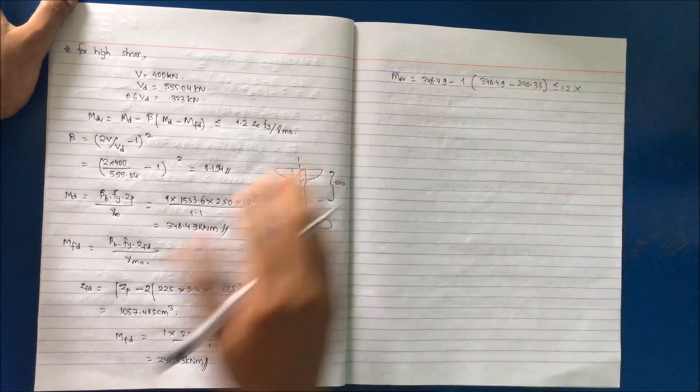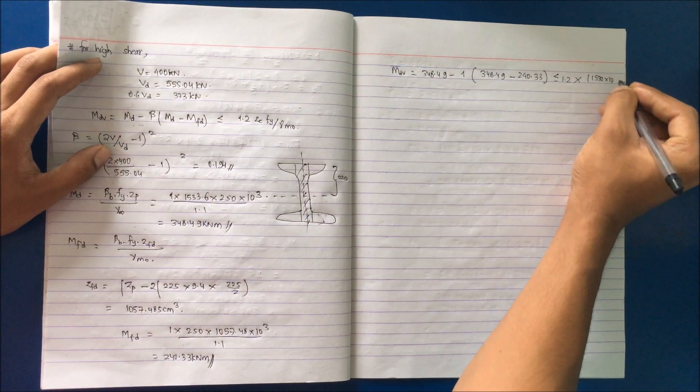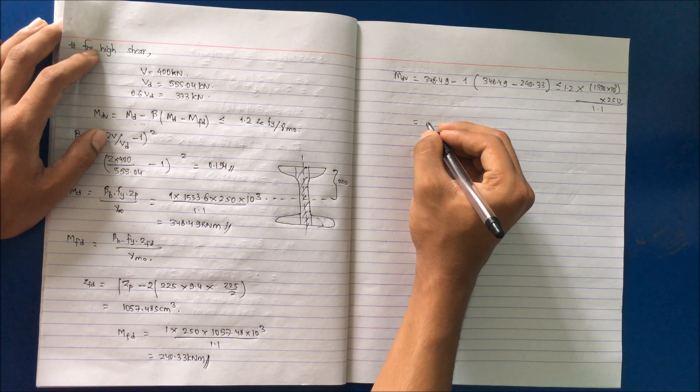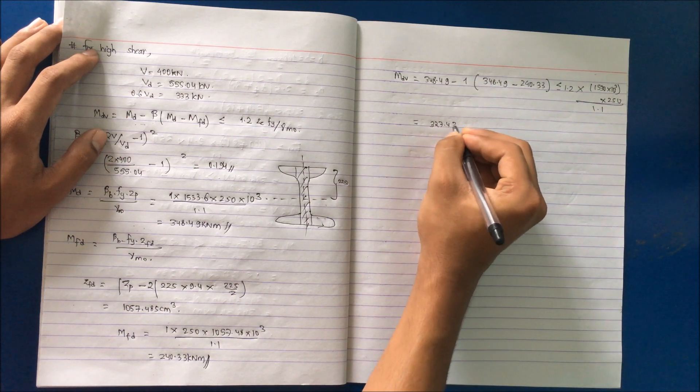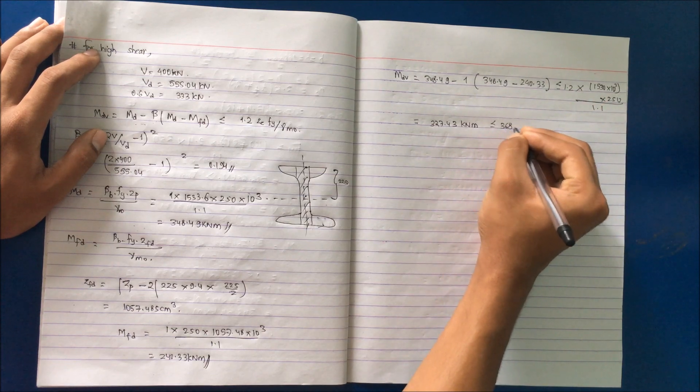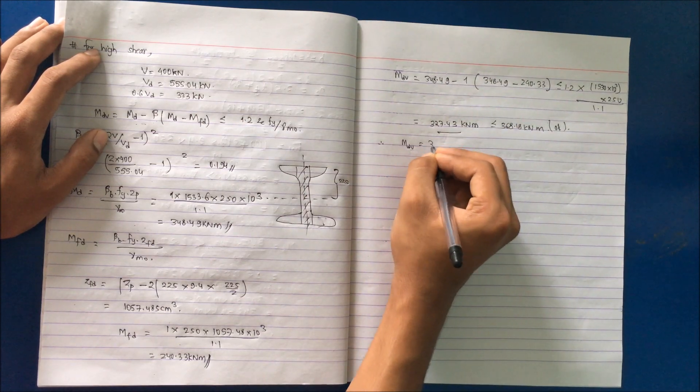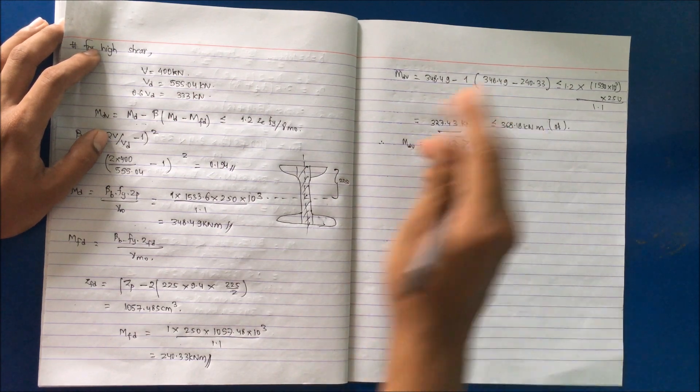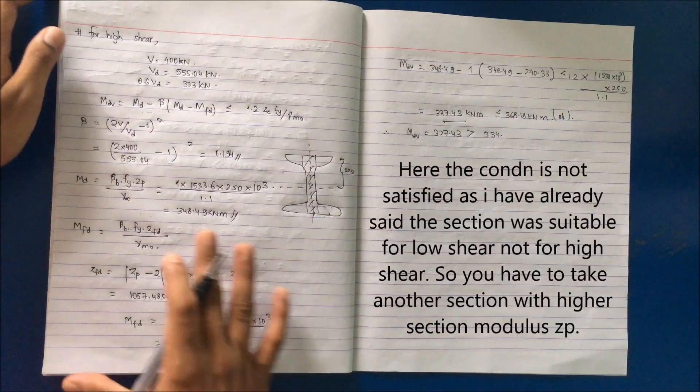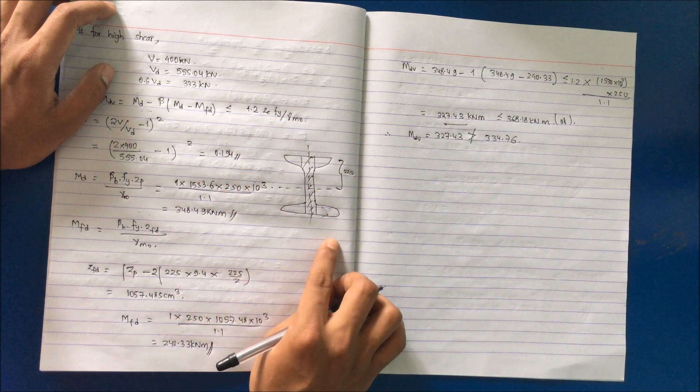Now putting the value here, we have MFD, beta, MD. It should be less than 1.2 Ze. We have calculated the value of Ze from the table: 1530 into 10 to the power 3 multiply by 250 divided by 1.1. We get this value as 327.43 kN·m, and this is 368.18 kN·m. MDB, the design value, should be greater than the value that will act on the section, 334. Here if we see 334.76, this condition is not satisfied, which means the design or section selection is not suitable.